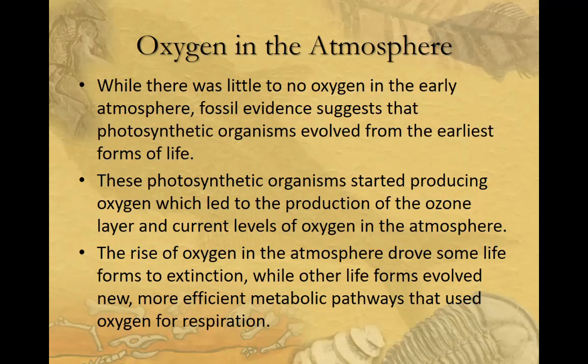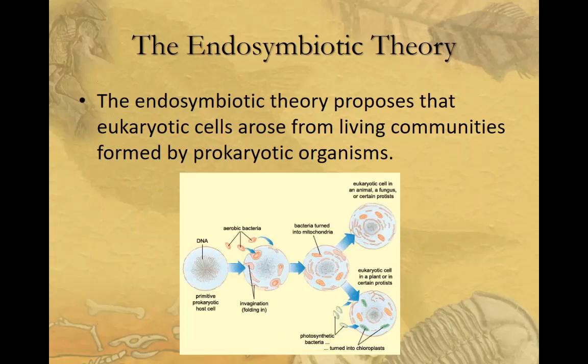One thing that comes out of this process is the endosymbiotic theory. 'Endo' means into — it proposes that eukaryotic cells like ourselves arose from living communities formed by prokaryotic organisms. Some smaller prokaryotic organisms were engulfed or consumed by larger organisms, and instead of being destroyed, they were kept because they provided a benefit. For example, the mitochondria and chloroplast actually have their own separate DNA from what we have in our bodies — amazing evidence of that ancient relationship.